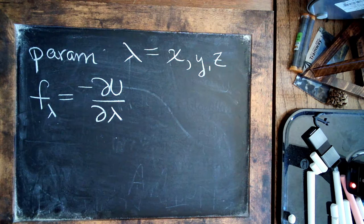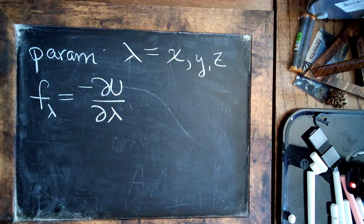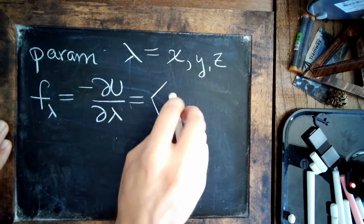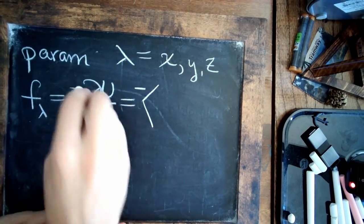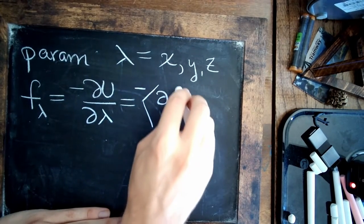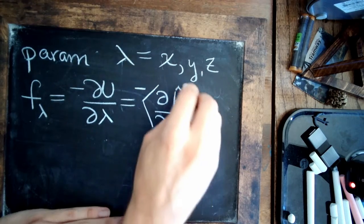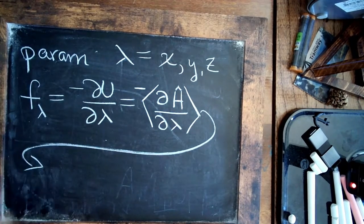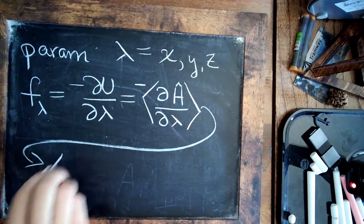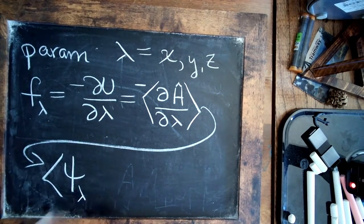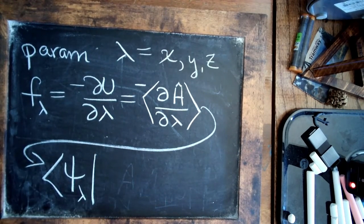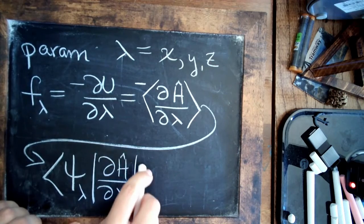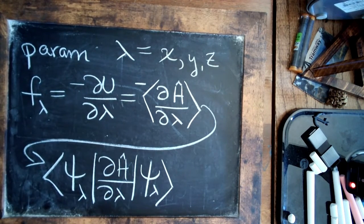And what Feynman showed in his paper is that you can actually compute this as just the average, or the expectation value, of the derivative of the Hamiltonian. So what is this in classical theory, in quantum theory rather? This would be just sandwiching it between state psi, the derivative with respect to lambda, and the state psi. So that's how we write the matrix elements.